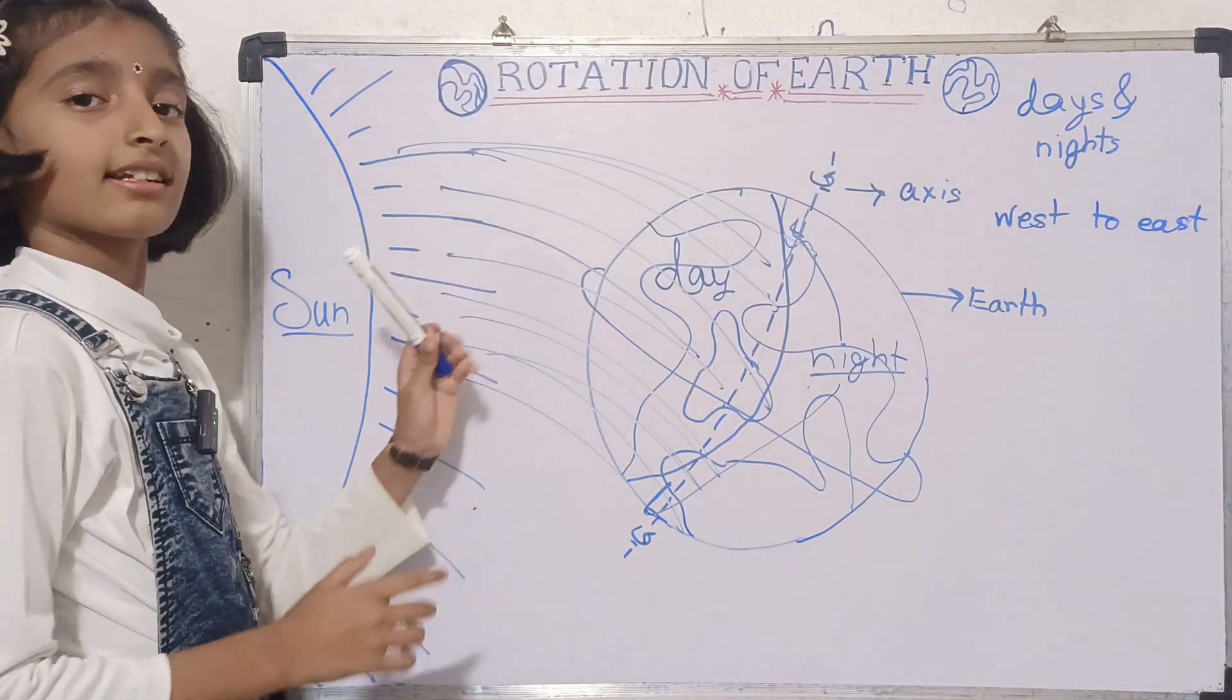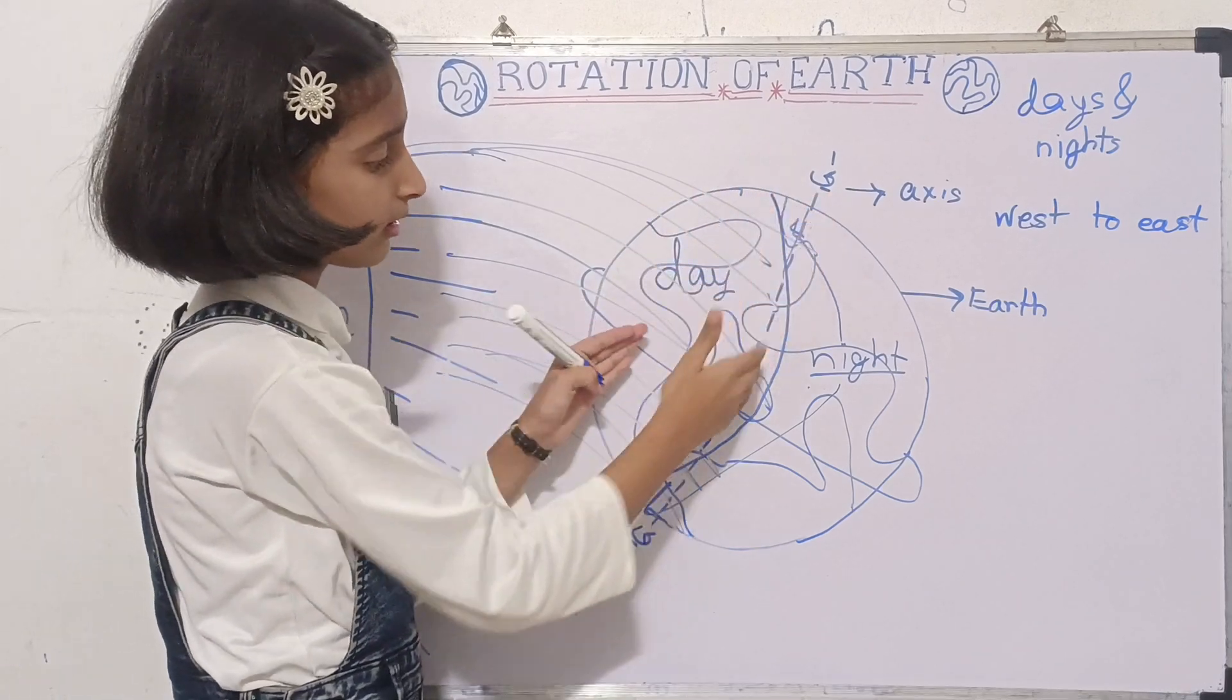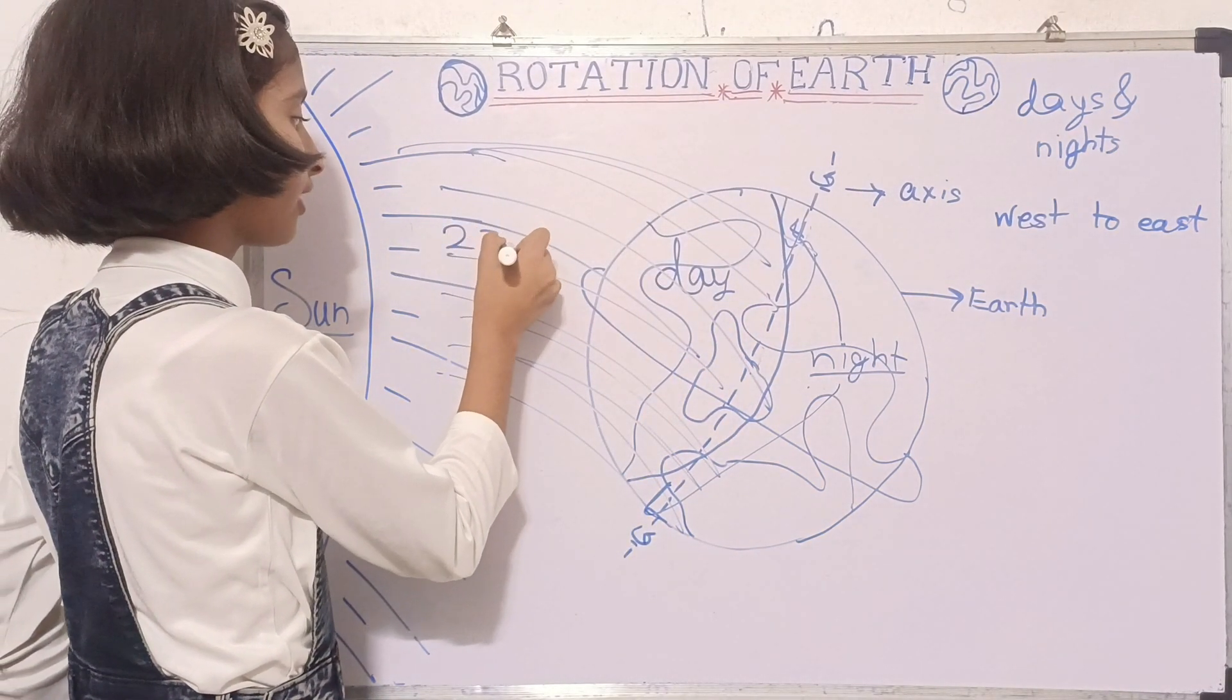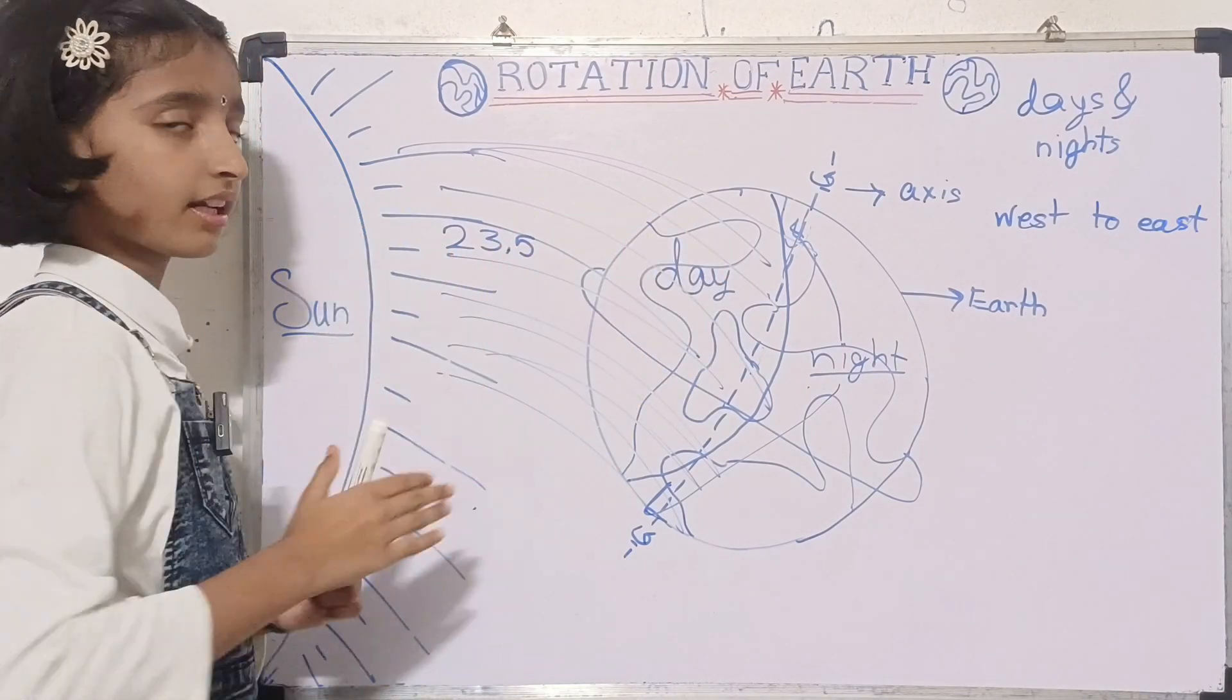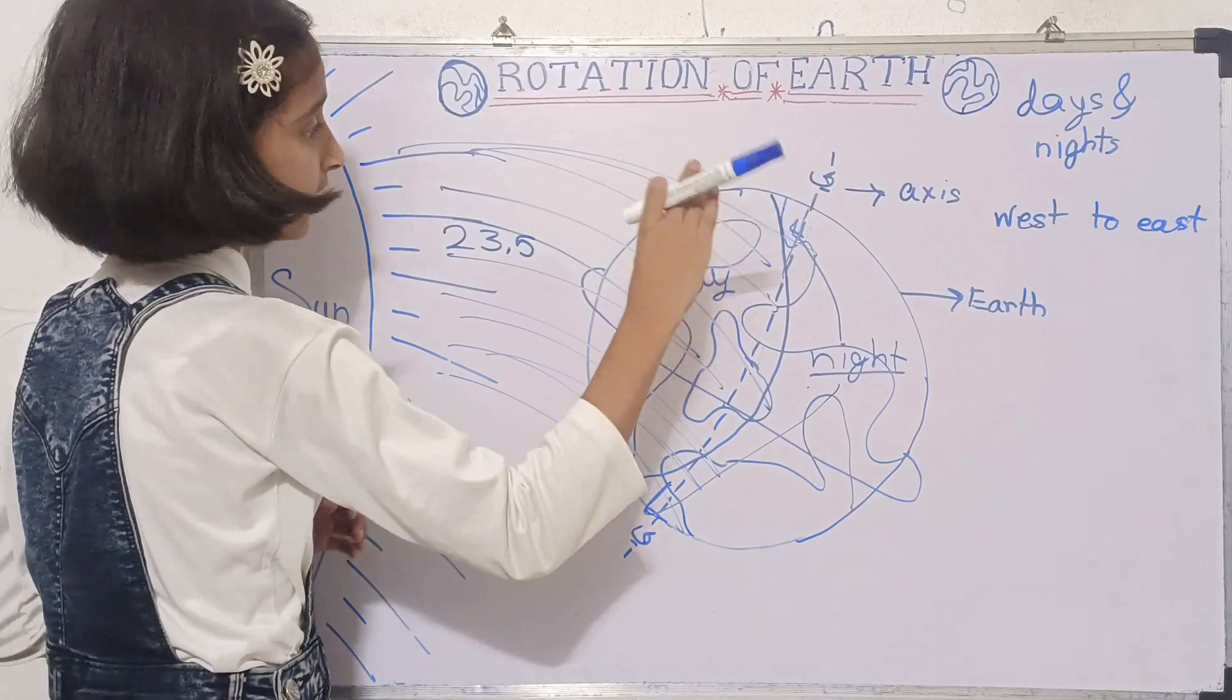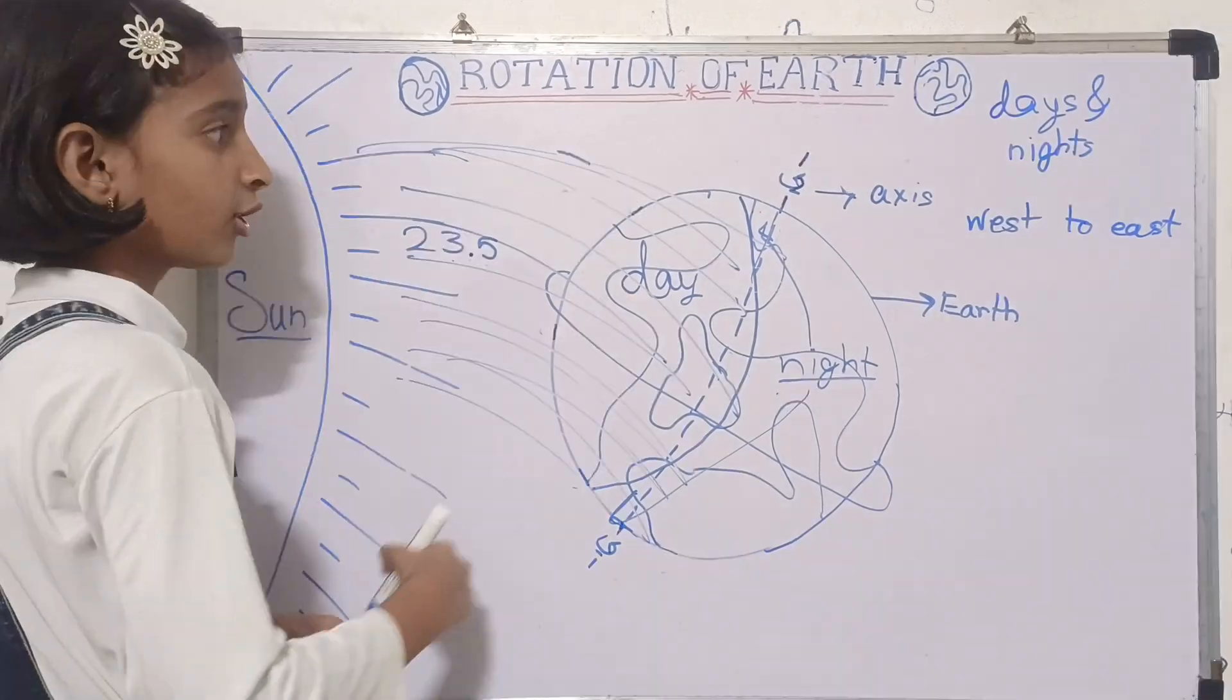It depends on how long the Sun rays are falling. Do you know why the axis is a little bit tilted? It is tilted 23.5 degrees. Why? Because an asteroid hit the Earth and it became tilted 23.5 degrees.